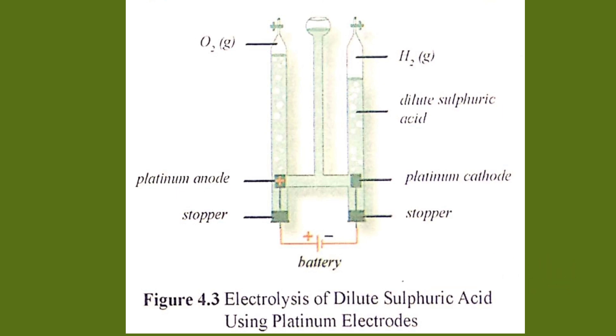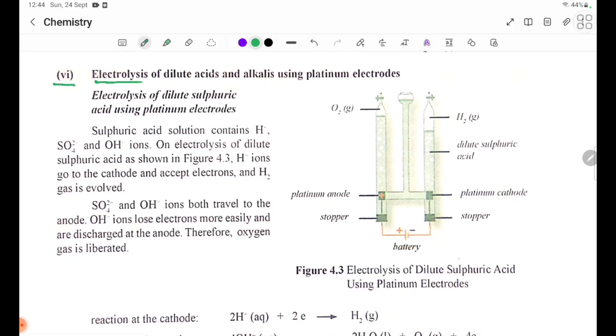Electrolysis of dilute acids and alkalis solution using platinum electrodes. Number 6. Electrolysis of dilute acids and alkalis using platinum electrodes.